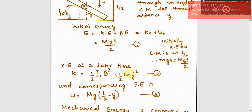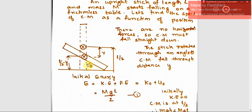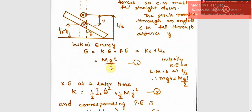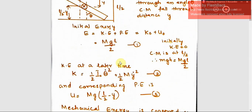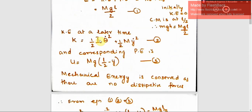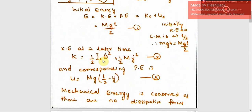Now the kinetic energy at a later time, when the stick has fallen and the angle is theta, the center of mass has come down by a distance y. Initially the center of mass was at L/2. Now it has fallen through y, so the remaining height will be L/2 minus y. If this angle is theta and the half-length is L/2, then L/2 minus y equals L/2 cos theta. The kinetic energy at this later stage is (1/2)I₀θ̇².